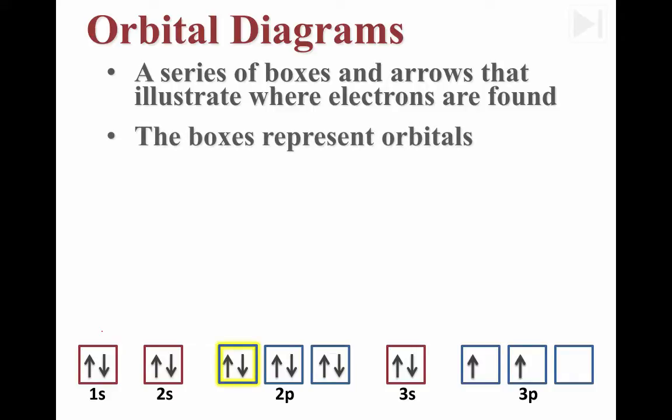Anywhere you see a box here, that represents an orbital. Recall that the 2p sublevel is made of three orbitals, so we've drawn in three boxes.